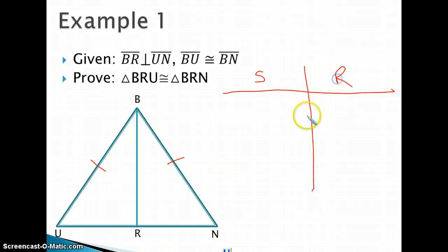In order to do this, I have to take a look at my two givens. I've got the one marked off already, the BU congruent to BN. And then the other given is that BR is perpendicular to UN. So that should be a red flag right there, that if I have perpendicular, then I'm going to have right angles where BR intersects UN.